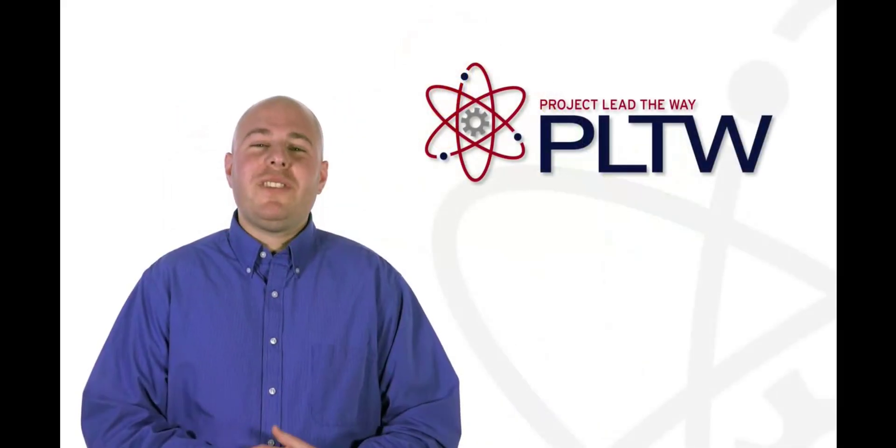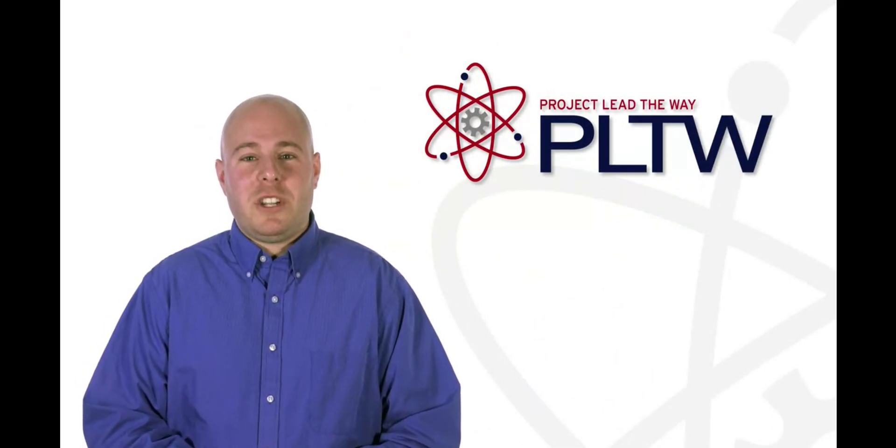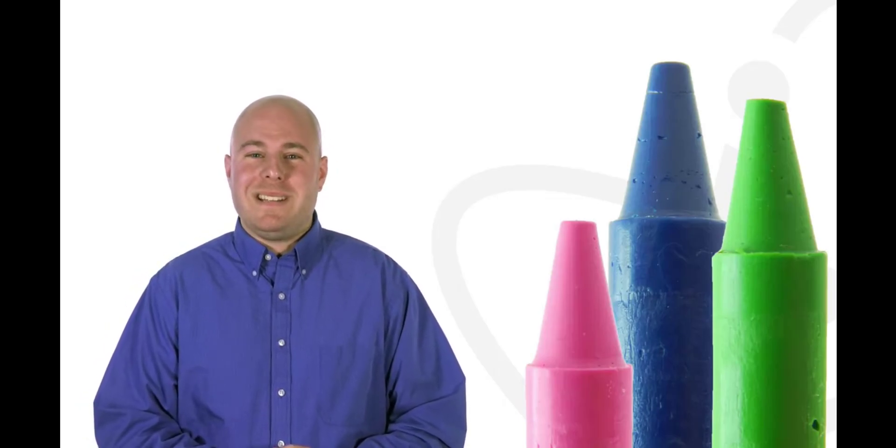The first young inventor we'll learn about is Cassidy Goldstein. Cassidy was 11 years old when she invented the Crayon Holder, a simple device used to hold broken or worn out crayons to make drawing with them easier.